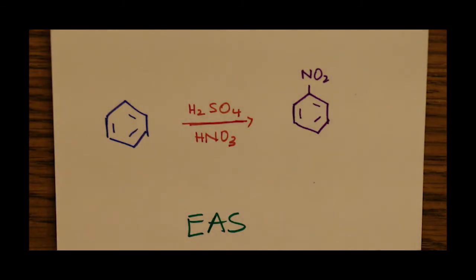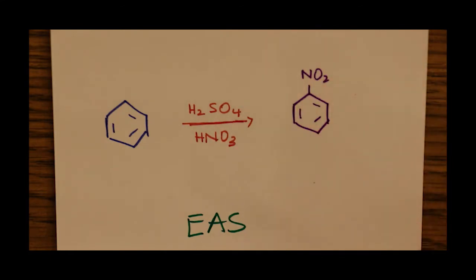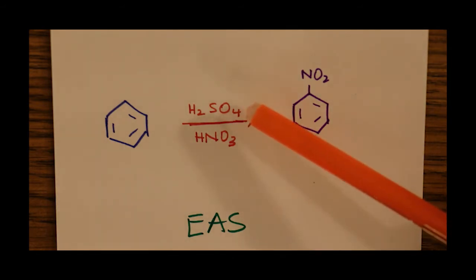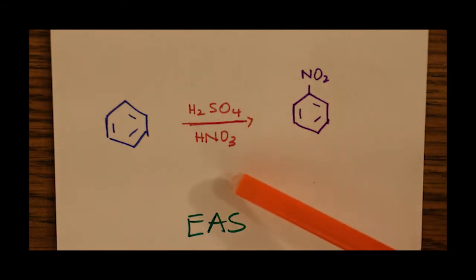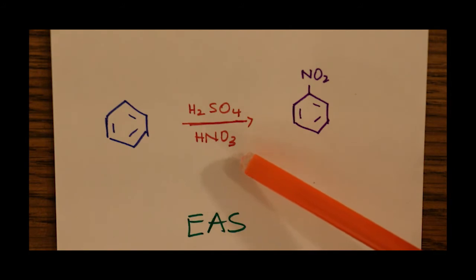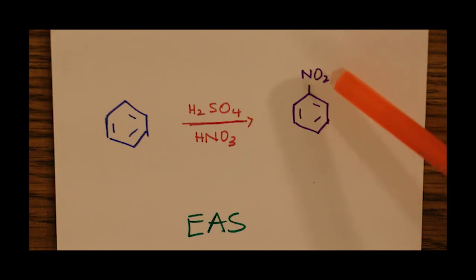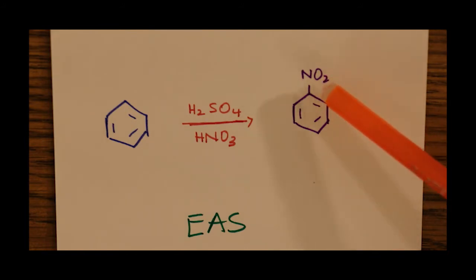The next kind of electrophilic aromatic substitution is called nitration, where we start off with a benzene ring and end up with nitrobenzene. This takes place in the presence of sulfuric and nitric acid. Sulfuric acid is the stronger acid, so nitric acid acts as a base and splits off into an OH and an NO2. The NO2 is what gets substituted on the ring to give us nitrobenzene.